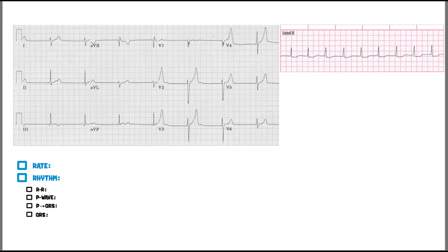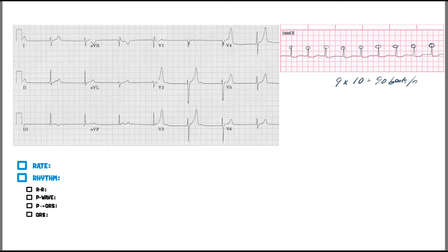All right, so now let's take this next EKG. For rate, we don't have a rhythm strip here, but we would add all the R waves up and multiply by six. On this one, with a six-second strip we multiply by ten: one, two, three, four, five, six, seven, eight, nine — that'd be nine times ten, 90 beats per minute.